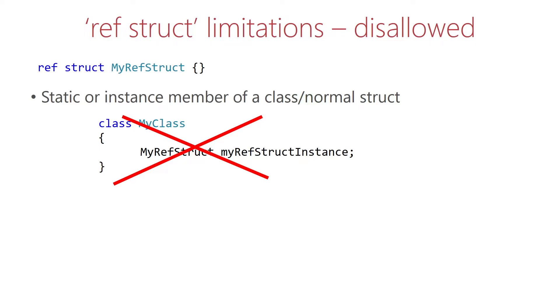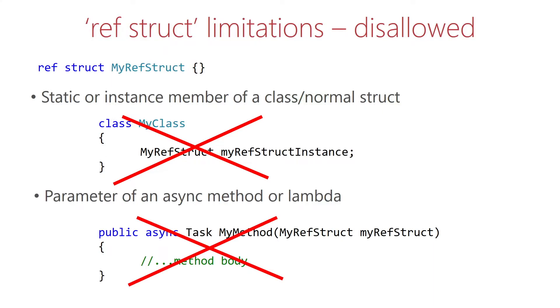A ref struct cannot be a method parameter of an async method or a lambda. The reason for that is that the compiler creates a class or a normal struct from your lambda and async methods, and with that we would again place the struct onto the heap, which is invalid.